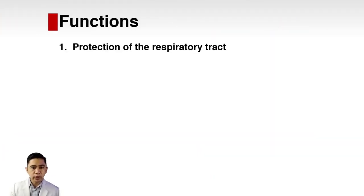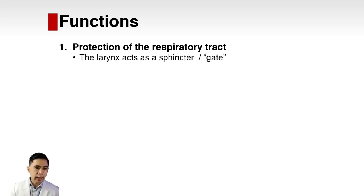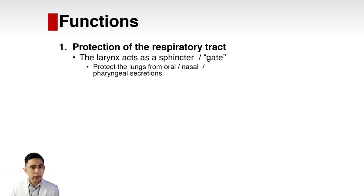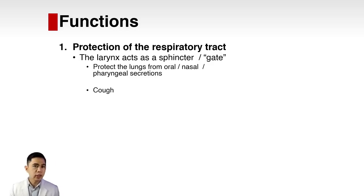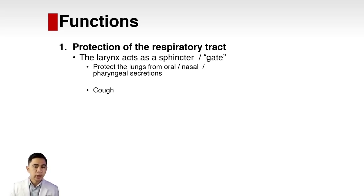The larynx acts like a sphincter or gate, protecting the respiratory tract. It protects the lungs from oral, nasal, and pharyngeal secretions. The lungs are sterile and the larynx plays a big role in keeping them sterile. This is exactly why there is the cough reflex. Cough is not a symptom of disease but a defense mechanism where the larynx, in conjunction with the lungs, expels unwanted oral or pharyngeal secretions.